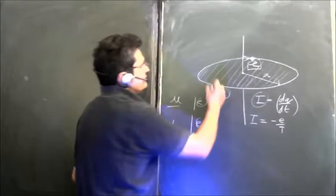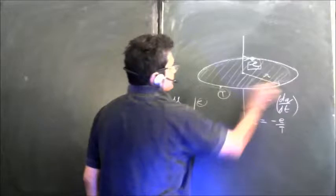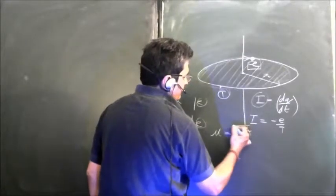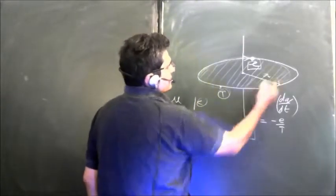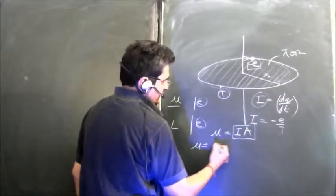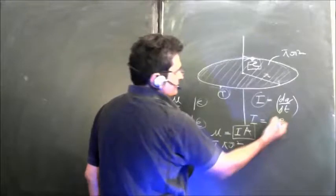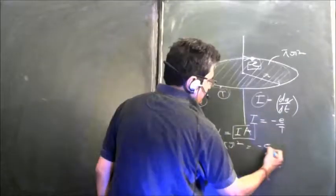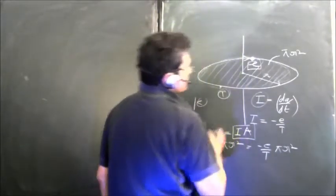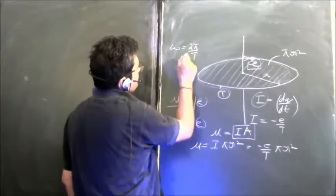The magnetic dipole moment of this current loop is I times A, where I is the current and A is the area. Here the area is πr². So the magnetic dipole moment is I·πr², which gives us minus e upon T times πr².